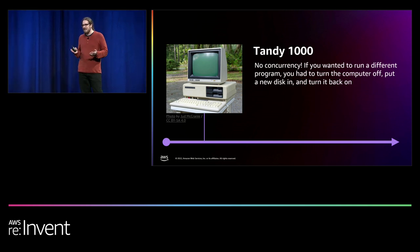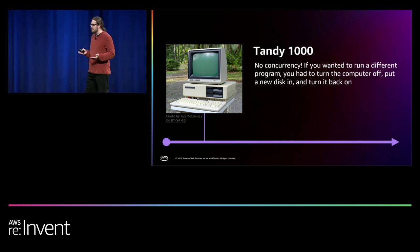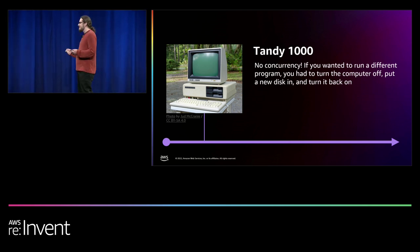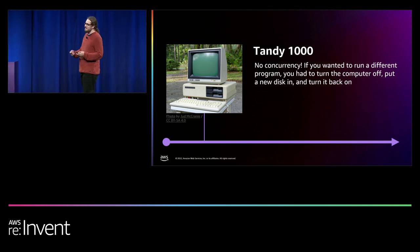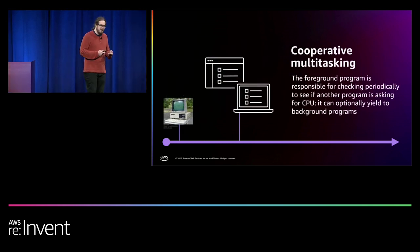The Tandy 1000 had an extremely low-power processor — four megahertz. It was only really capable of running one program at a time, and if you wanted to run another program, you had to physically turn the machine off, take the disk out, put a new disk in, and turn it back on. So no concurrency really going on there.